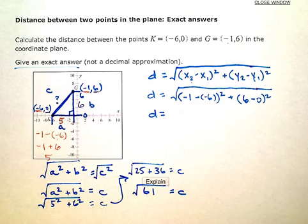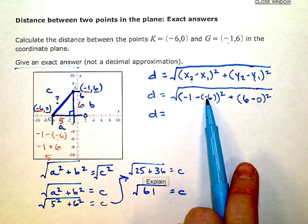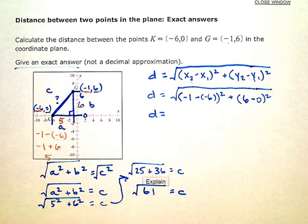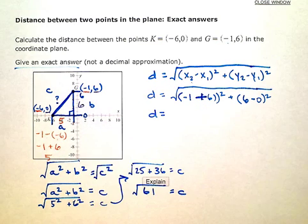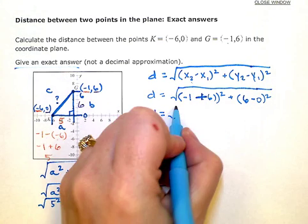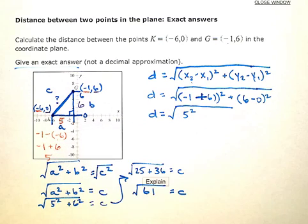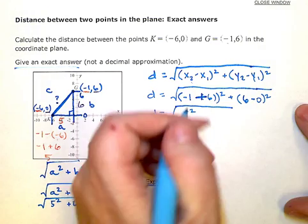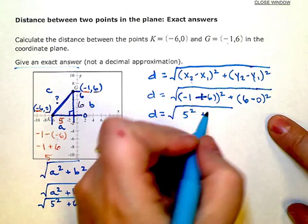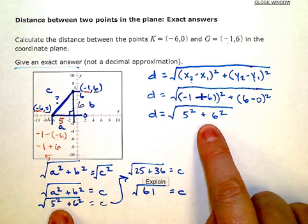We have everything plugged in, now we just simplify. So subtracting a negative is the same as adding. So that's really the same as negative 1 plus 6, which would be 5 squared. Negative 1 plus 6 is 5, and then we have to square it. Over here, plus 6 minus 0 is 6 squared. And then you can see we're at exactly the same spot we were over here.